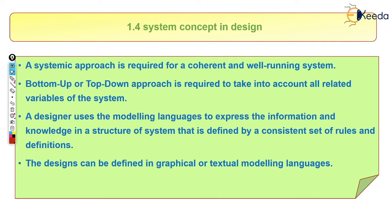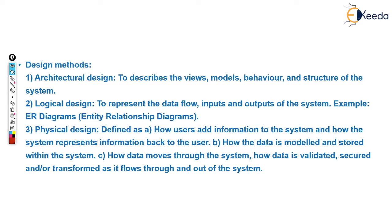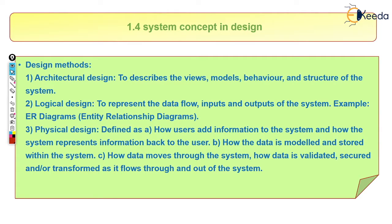System design uses modeling language to express information and knowledge of the structure of the system, defined by a consistent set of rules and definitions. It depends on the designer how he designs a component — he must consider factors like strength, capacity, and material. There are particular guidelines to follow, and these designs can be done graphically or through other methods. There are three types of design methods.